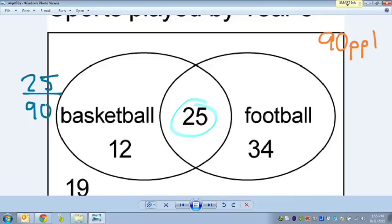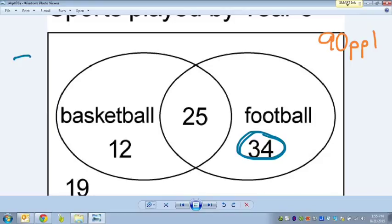And then let's say I wanted to ask you another question. Let's say I wanted to ask you, how many people in the survey, what's the probability that I pick a person that likes football only? So football only is this number here, 34 people. So 34 divided by 90 people that were surveyed. Gives us our answer.